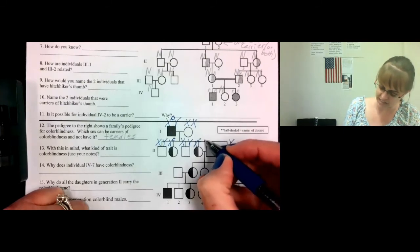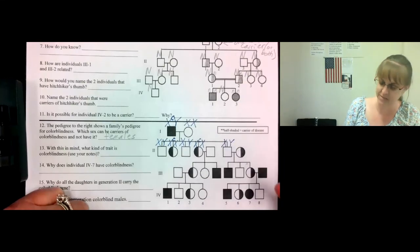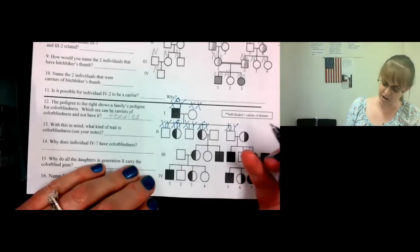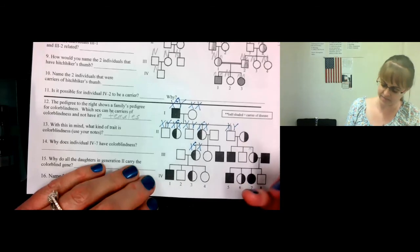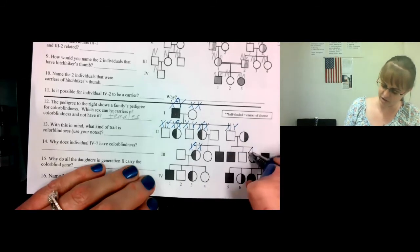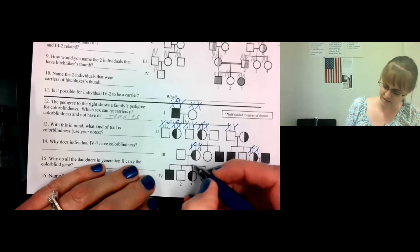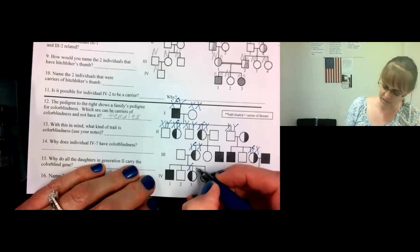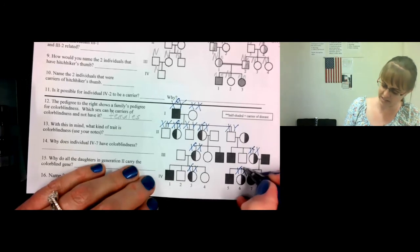This one is a carrier, so we know she has one recessive X and one normal X. This one's a carrier. Recessive X, normal X. Another carrier, recessive X, normal X. Recessive X, normal X.